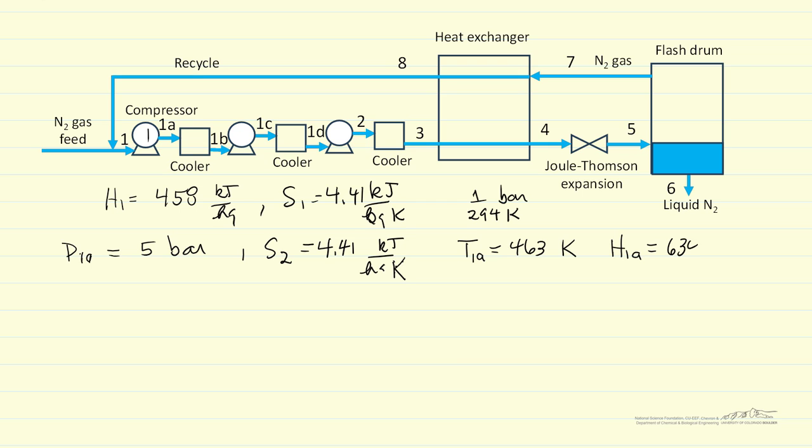From the spreadsheet, the temperature at 1A is 463 Kelvin, and it's 634 kilojoules per kilogram. Which means we could calculate the work for that first compressor as H₁A minus H₁, just the change in enthalpy, 634 minus 458. So the work for the first compressor is 176 kilojoules per kilogram. We can do the same exact type of calculation for the second one, so I'm going to pause and write down those numbers.